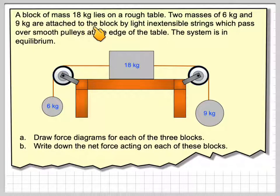A block of mass 18 kilograms lies on a rough table. Two masses of 6 kilograms and 9 kilograms are attached to the block by light, inextensible strings, which pass over smooth pulleys at the edge of the table. The system is in equilibrium.